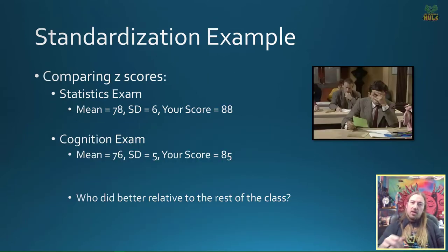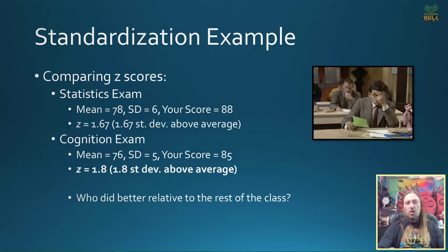So we can take some raw scores. Stats exam, cognition exam. Two hypothetical tests that let's say you take. You ended up getting an 88 in stats, you got an 85 in cognition, so at least on the surface it looks like you did worse in cognition. But maybe there's more under the surface here. So look at the average on that stats exam, it's a 78, standard deviation of 6. So knowing that information, we can plug that into our z-score formula. Your score of 88 minus the mean of 78 divided by 6, and we'd have a z-score then of 1.67.